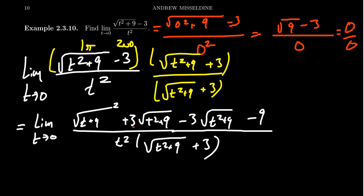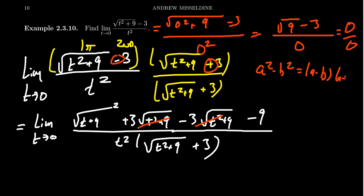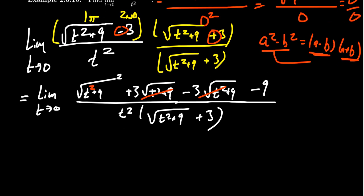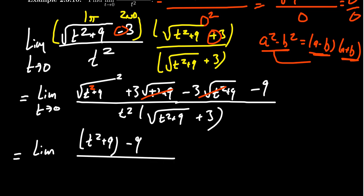You'll notice that three times the square root of t squared plus nine and negative three times the square root of t squared plus nine are like terms — they cancel each other out. This is the main idea behind multiplying by the conjugate, playing off the difference of squares: a squared minus b squared equals a minus b times a plus b. The middle terms cancel, and the square root of t squared plus nine, quantity squared, cancels the square root, leaving t squared plus nine minus nine in the numerator.